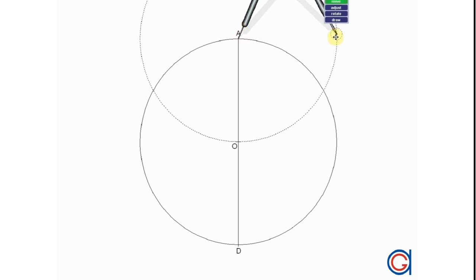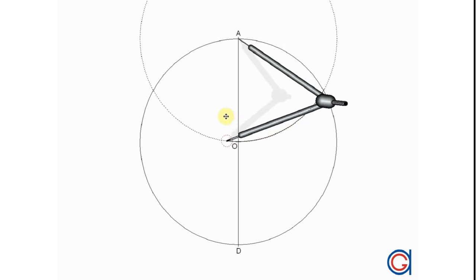The next step: with our compass set to the length of the radius of the circle and centered on point A, we scribe an arc which cuts the circle at two points, as can be seen here in the video.